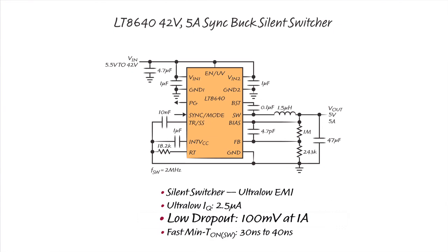The LT8640 can operate at 99% duty cycle, resulting in a low dropout of 100 millivolts at 1 amp under all conditions. This is similar to an LDO regulator. A fast minimum switch on time of 30 to 40 nanoseconds allows practical operation at high switching frequencies with the ability to be synchronized from 200 kilohertz up to 3 megahertz.